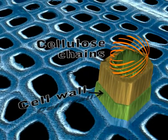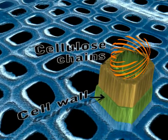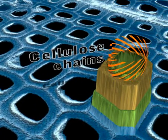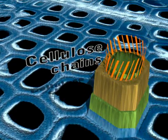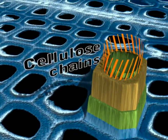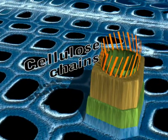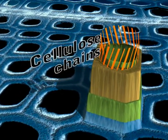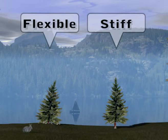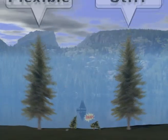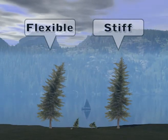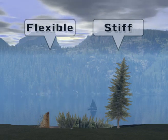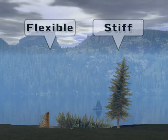In the middle of the tree, the chains go round and round in a spiral, so the middle part of the tree is less stiff and not so strong. Towards the outside of the tree, the cellulose chains are more vertical, making this part of the wood stronger and stiffer. A young tree needs to be flexible so that it can bend with the wind without breaking, but as it gets older and larger, it must become stiffer to avoid being blown over. That's why it grows stronger and stiffer wood the older it gets.